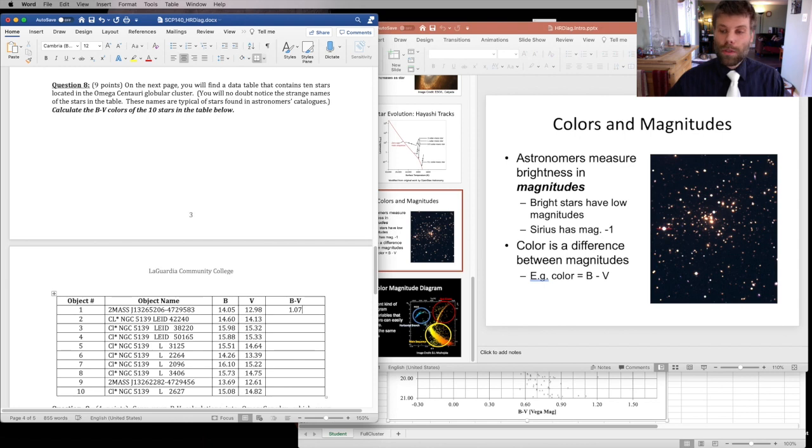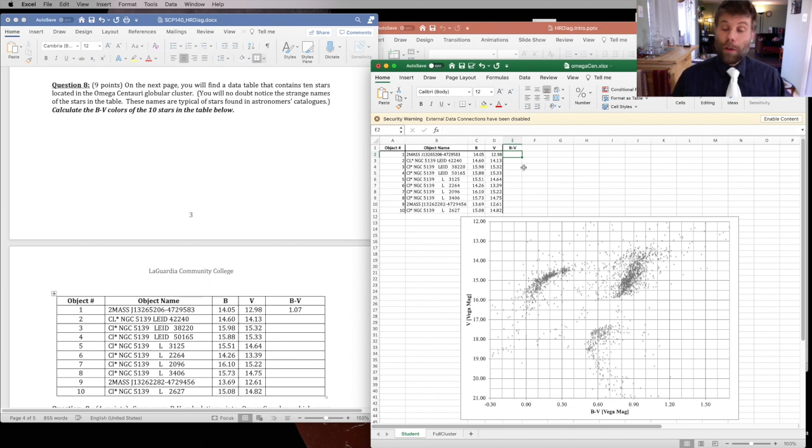And then once you finish that, you'll copy those into an Excel spreadsheet that I've provided for you. So you would copy that value 1.07 from the first row into the first row in the spreadsheet. And once you've entered that value, you'll see a blue diamond appear at the appropriate location on the graphic. Every time you enter a new data point, a new location will be marked on your graph. And once you've finished copying all of your data into the spreadsheet, you'll have a complete graph which produces a color magnitude diagram. This is the observer's version of the HR diagram.